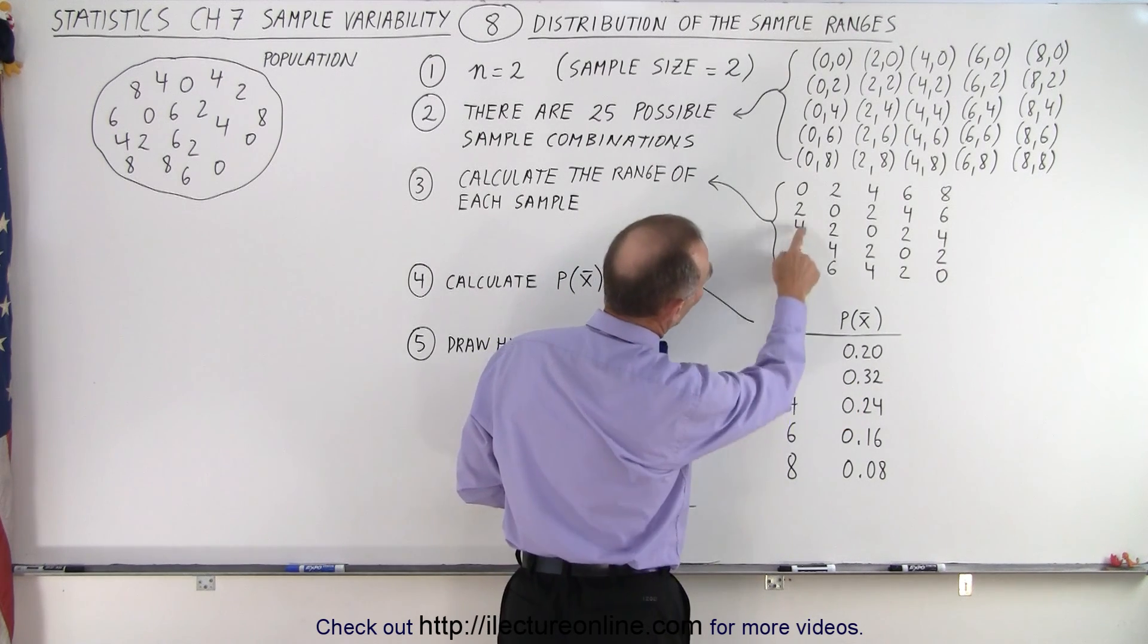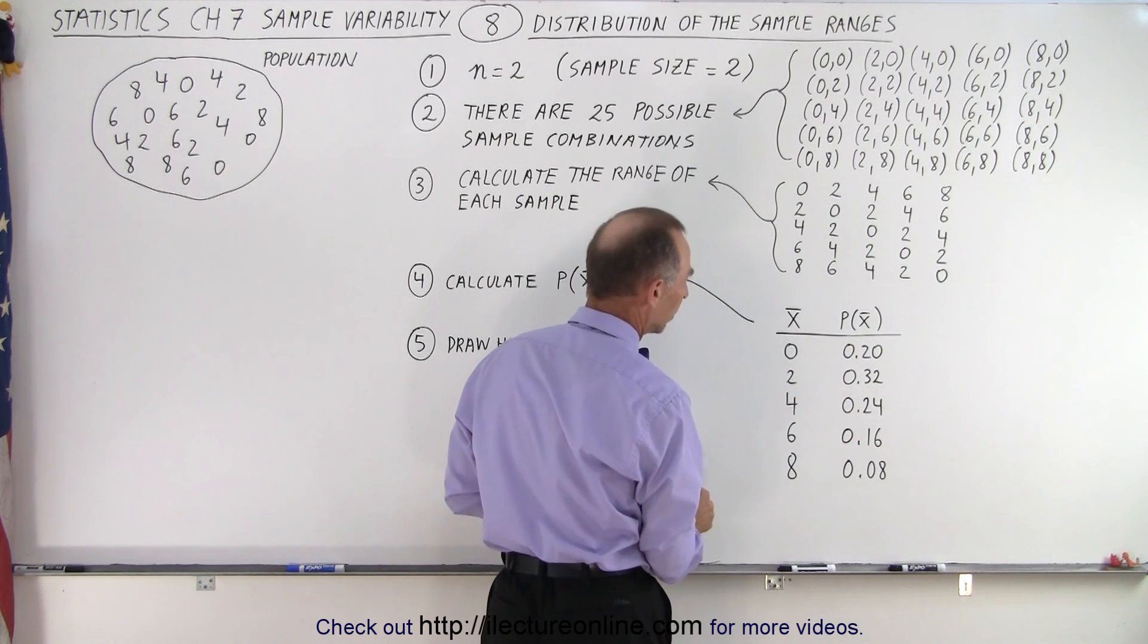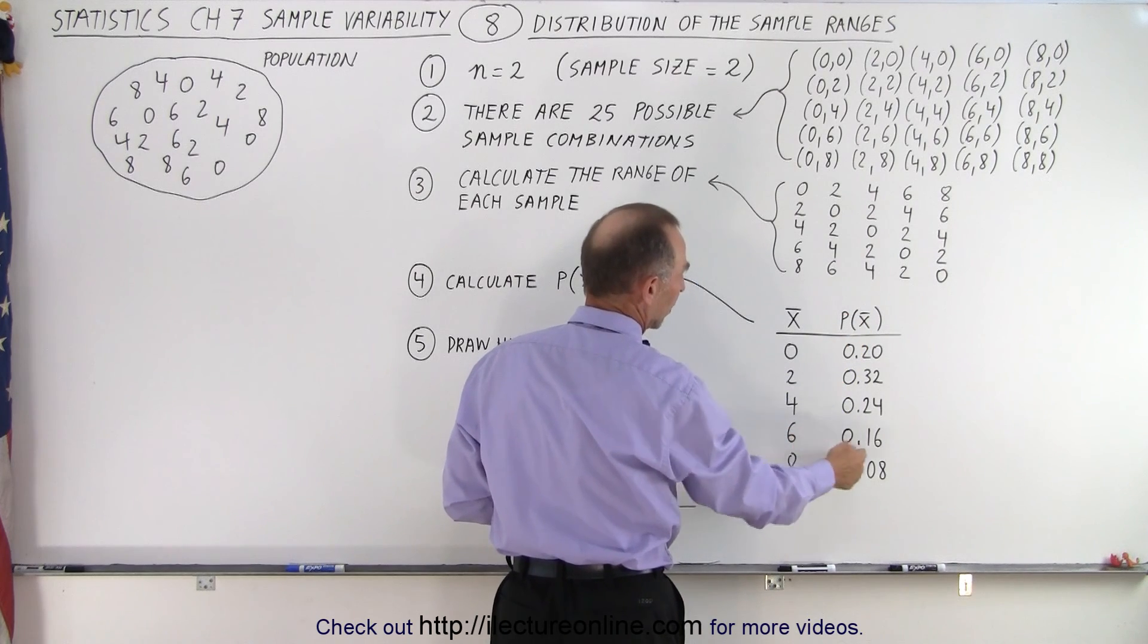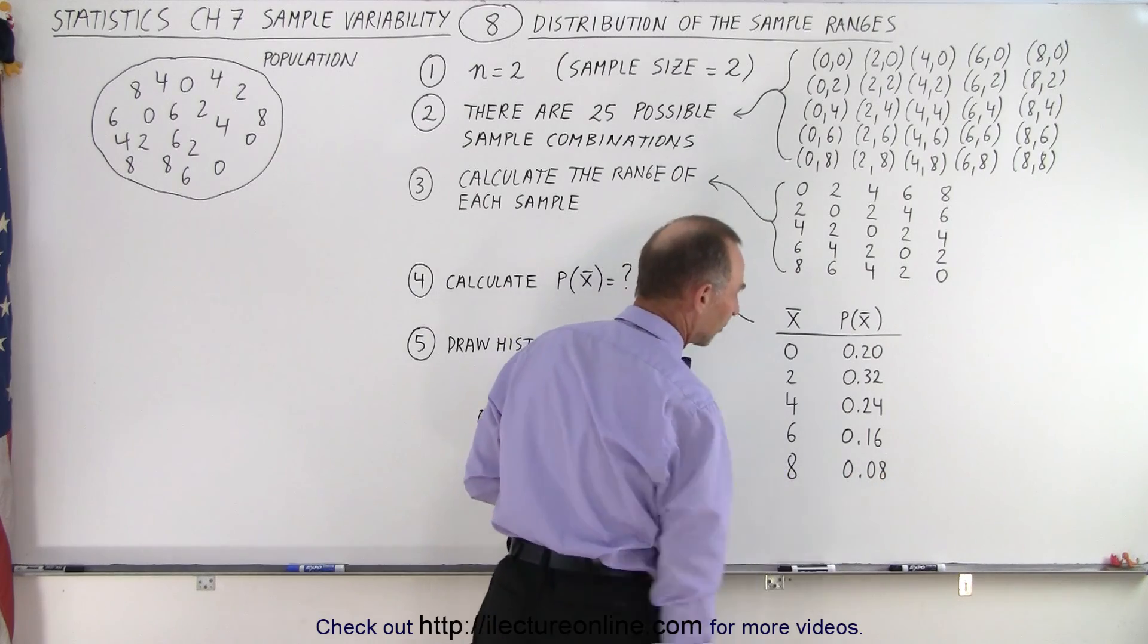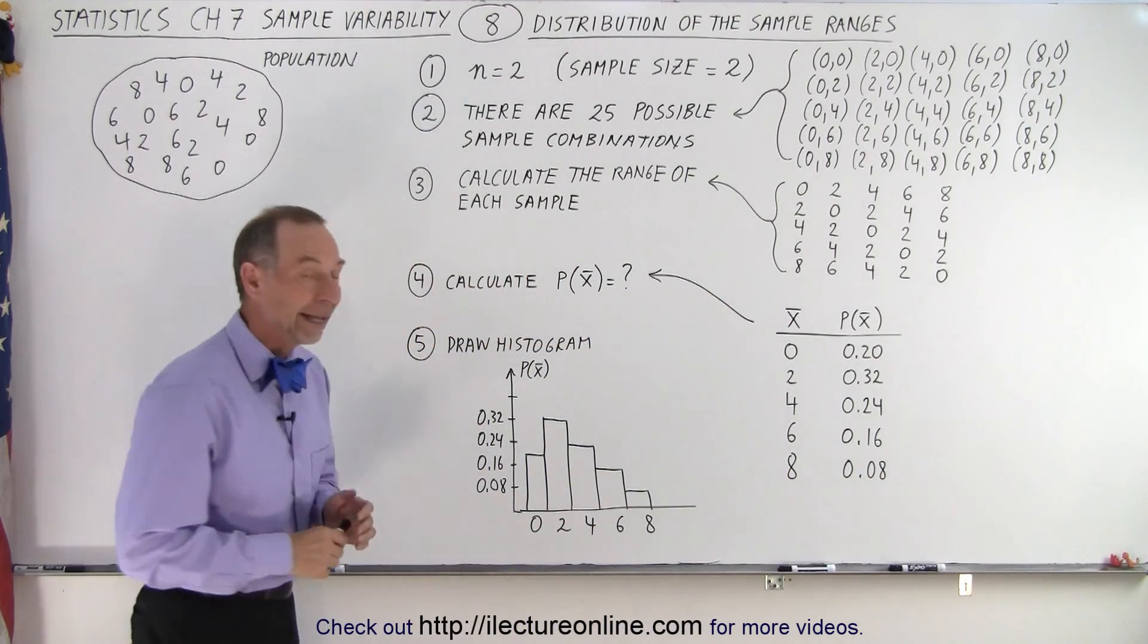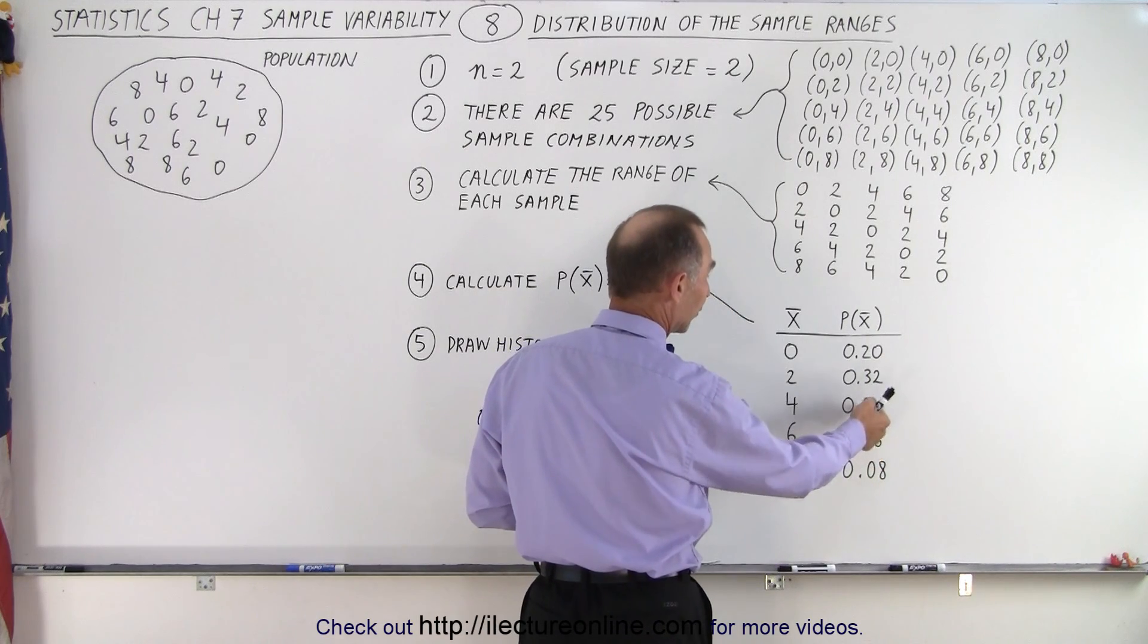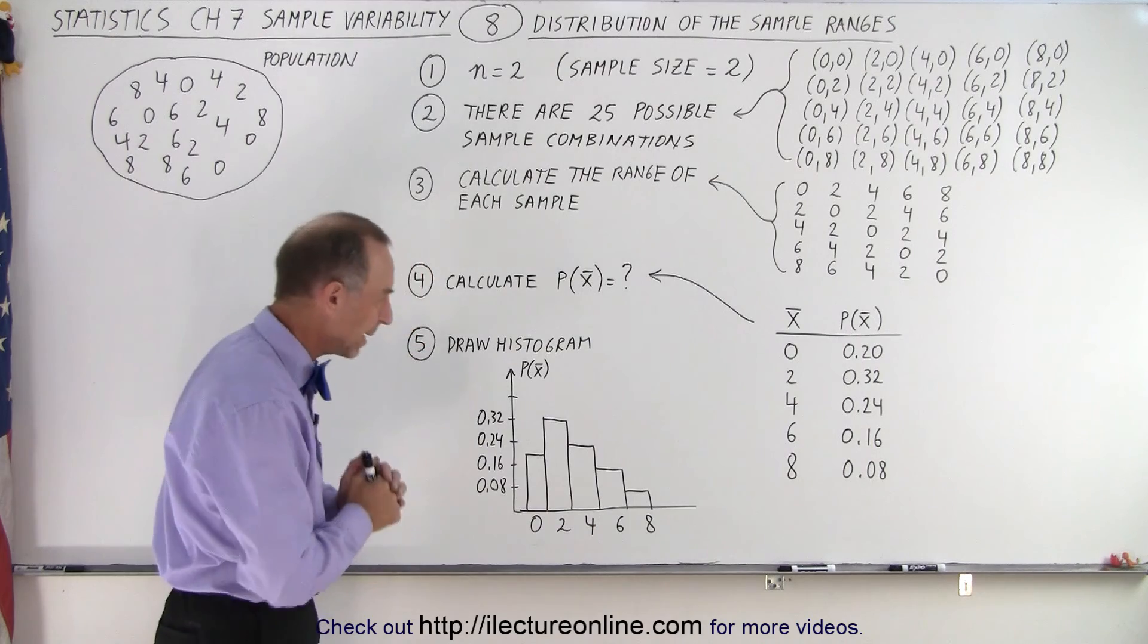Notice for the range of 4 there is 6 possibilities, 6 out of 25 is 0.24. Then we can see there's 4 sixes which means 4 out of 25 is 0.16, and there's 2 ranges of 8 which is 2 out of 25 is 0.08. And then when you add all those up you should get 1, so that's 24, 48, 50, 80, 20. Yes indeed that is 1, so we didn't make any mistakes.